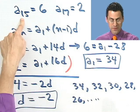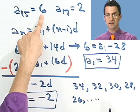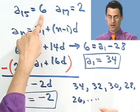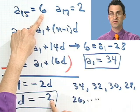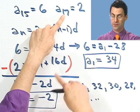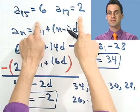And it turns out, if you keep going, the 15th term will be 6. And then what's the 16th term? It's going to be 6 minus 2, which is 4. And the 17th term is 4 minus 2, which is 2. And there's that.